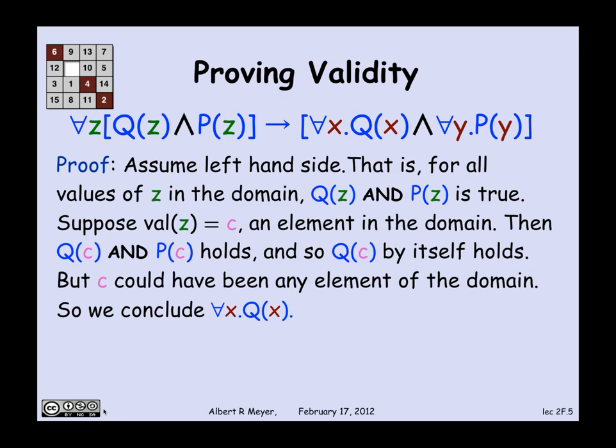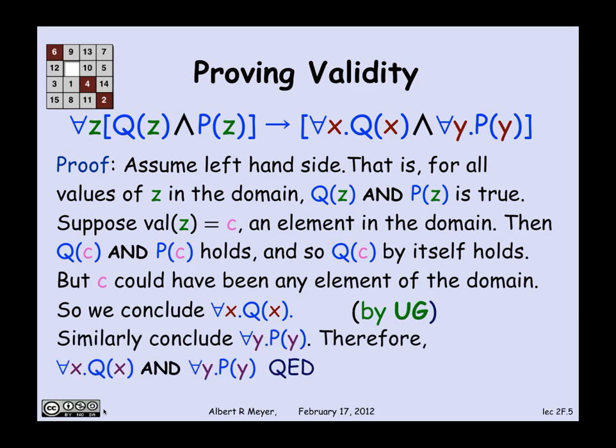That step of saying, I proved it for Q of a given element without making any assumptions about the given element, except that it's in the domain, and therefore I can conclude that it holds for all domain elements, is a very natural and plausible rule. It's a basic axiom of logic called UG, universal generalization. I've just proved that for all x Q of x holds. And by a completely symmetric argument, for all y P of y holds. Having proved both, clearly the and holds, and I've just proved that the right-hand side of this implication is true.